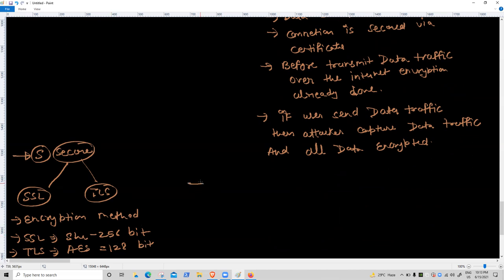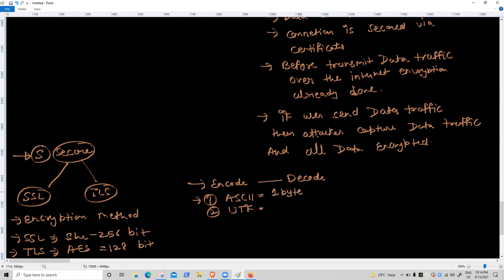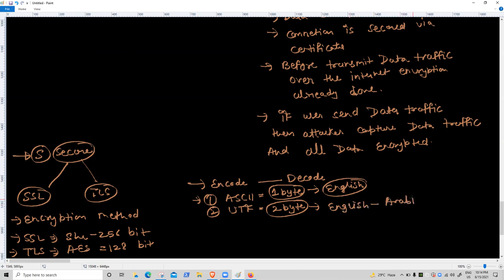What is the meaning of encode and decode? Two formats: ASCII and UTF. ASCII stands for American Standard Code for Information Interchange and uses a one-byte algorithm, supporting only the English language. UTF — Unicode Transformation Format — uses a two-byte algorithm and supports English, Arabic, Chinese, Japanese, and emojis. UTF is the more preferred format.